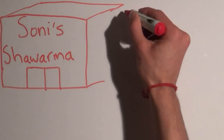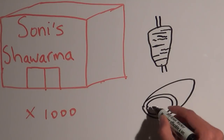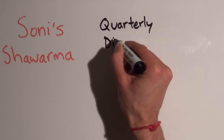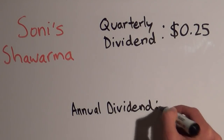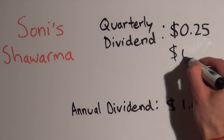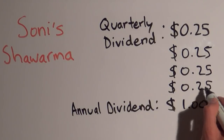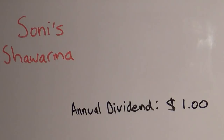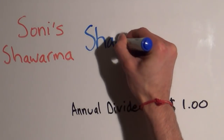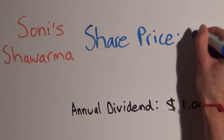Sonishwarma is a restaurant chain that has thousands of restaurants across the country and obviously sells shawarmas. Sonishwarma pays a quarterly dividend of 25 cents, which means in a year it pays a total dividend of a dollar, since 25 cents every three months adds up to a dollar every year. So we know how much Sonishwarma pays in dividends for every share that we own, but we don't know how much it costs to buy one share of Sonishwarma.